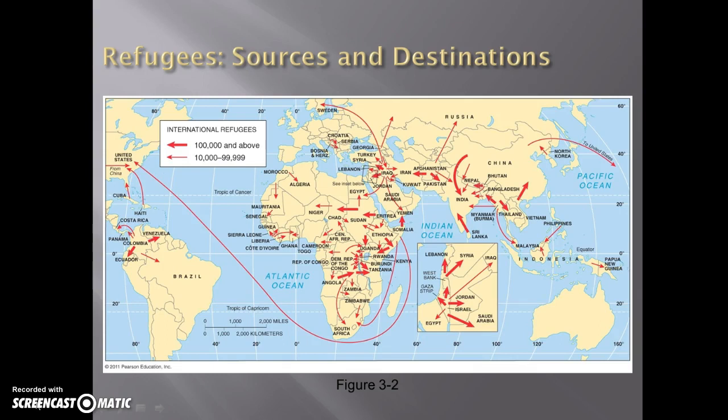One of the most important things we can talk about in terms of people moving is that people don't like to move very far. That's why even when talking about refugees who are fleeing, they're fleeing to nearby countries. Unless they really don't feel safe or unless they have family or friends in a foreign country, they're probably not going to go all the way across the ocean or halfway around the world — because they want to be able to return home someday.